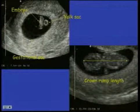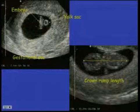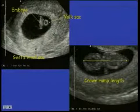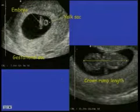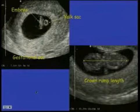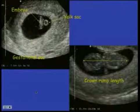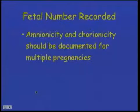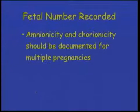Here's a gestational sac — you can see the crown rump length here, the yolk sac to the right, and this is the gestational sac. Here we have a measurement for the crown rump length of the embryo that measures 33 millimeters.